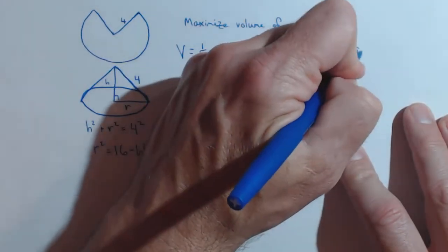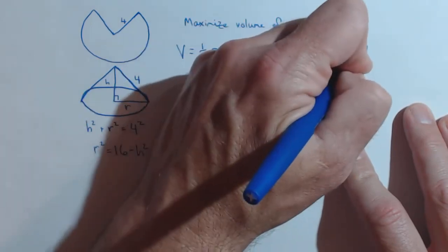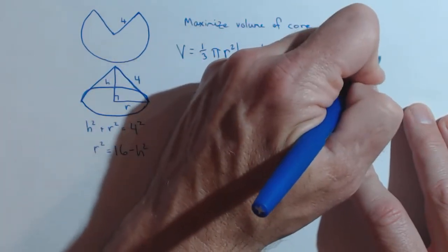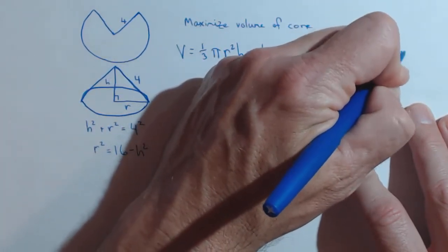We're taking it one more step. I'm just going to write this as pi over 3 times 16h minus h cubed.